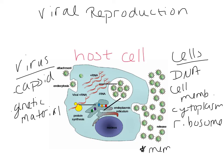Eukaryotic cells will have membrane-bound organelles: mitochondria, lysosomes, vesicles, vacuoles, and endoplasmic reticulum. Looking at this host cell here, this particular host cell is a eukaryotic cell - it has a nucleus and endoplasmic reticulum - and this host cell is required for the virus to reproduce.